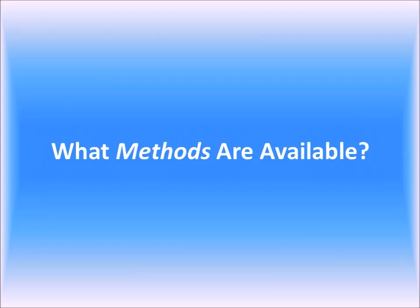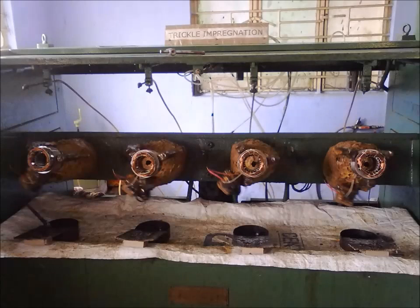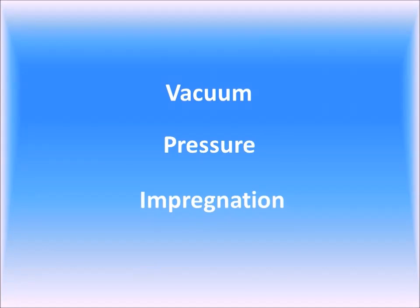So what methods are available? There are various impregnation methods available, chosen based on such factors as the voltage of the machines and the cost of the system. For example, many low voltage manufacturers use hot dipping technology or trickle impregnation. However, for our purposes, we will be discussing a method known as vacuum pressure impregnation, or VPI, which involves the use of a vacuum and pressure, as the name implies, along with a resin instead of the traditional varnish, and is primarily used for high voltage motors and generators.